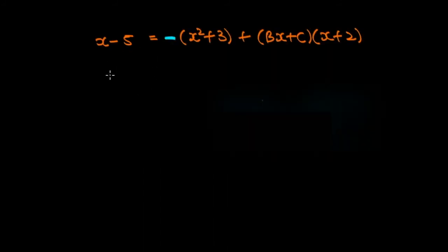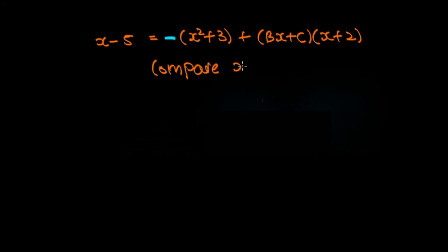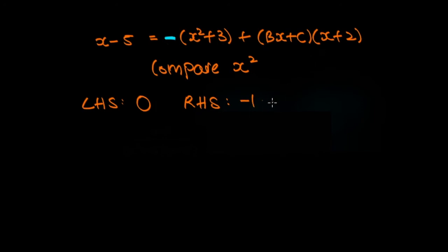At this point we could continue picking values for x, for example x equals zero or x equals one. But for the sake of variety, let's compare coefficients. Comparing the coefficients of x squared: on the left we have zero x squared. On the right, from the a term we have minus one, and expanding the brackets we get bx squared, giving a total of minus one plus b. Since the equation must hold for any x, zero equals minus one plus b, therefore b is equal to one.